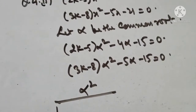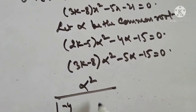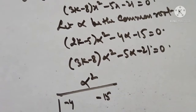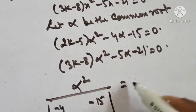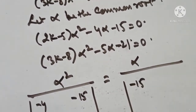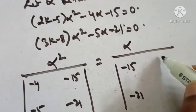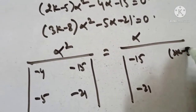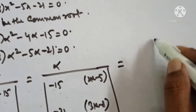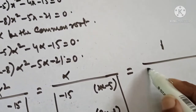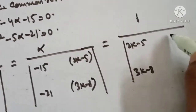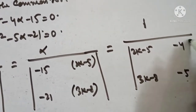Setting up cross multiplication: alpha squared over (minus 4)(minus 5) minus (minus 15)(minus 21), and alpha over (minus 15)(3k minus 8) minus (minus 21)(2k minus 5), and 1 over (2k minus 5)(minus 5) minus (minus 4)(3k minus 8).